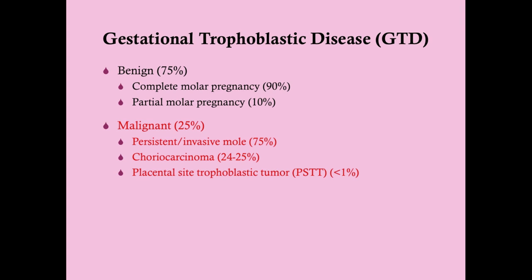Out of the gestational trophoblastic disease, if you take a cross-section of the population that has GTD in general, 25% will have malignant GTD. Most malignant GTDs will follow a complete molar pregnancy. Only a minority will follow a partial molar pregnancy. Partial molar pregnancy is much more rare than complete molar pregnancy, but complete molar pregnancy has more predilection to become a malignant form.